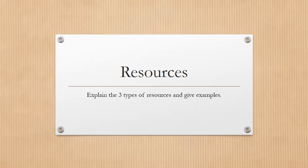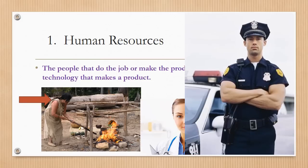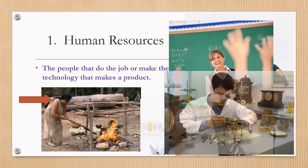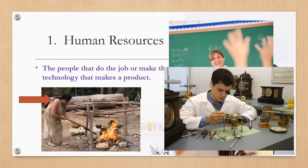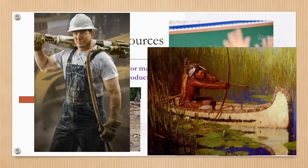You should have given an example of each resource type. Number one, human resources: the people that do the job or make the product. You can see the woman cooking over the fire — she is a human resource. The doctor, the policeman, the teacher, the clock or watchmaker, the Indian hunting, and the construction worker are all human resources.